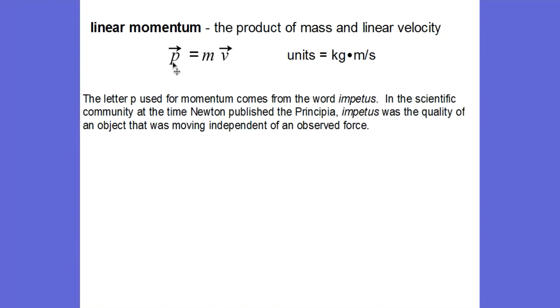But originally, a force caused a change in momentum, and at that time, the time when Newton published his work Principia, there was a word impetus, and that was the quality of an object that was moving independent of an observed force. So from the word impetus, we get the letter P for momentum.